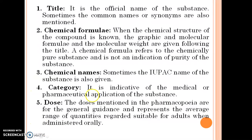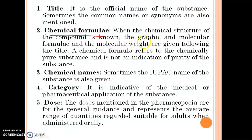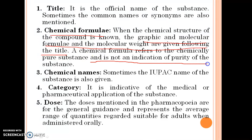The title is the official name of the substance; sometimes common names are also mentioned. For chemical formula, when the chemical structure of the compound is known, the graphic and molecular formula and molecular weight are given following the title. A chemical formula refers to the chemically pure substance and is not an indication of purity of the substance.